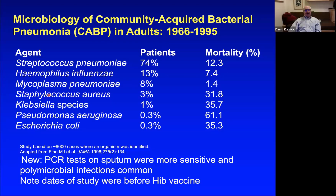On the other hand, Staph, Klebsiella, Pseudomonas, and E. coli pneumonias are quite rare because they are strictly opportunistic infections. The people who get them typically have crippled immune systems, which is also why they got the pneumonia in the first place — and as a result, the mortality from these organisms is much higher.